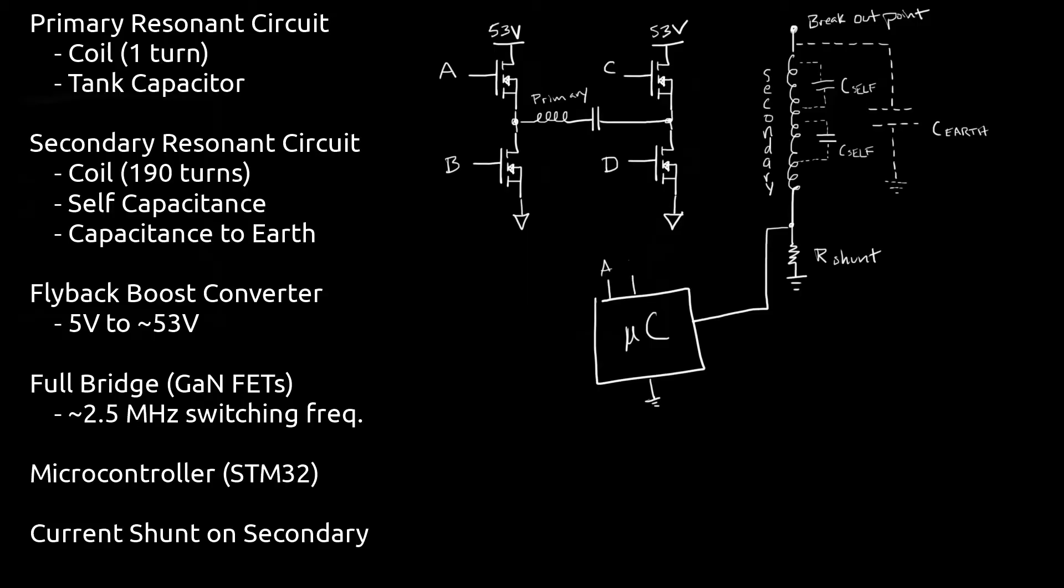It should be noted that this design also includes a dead time circuit which prevents each half bridge from having both of its GaNFETs on at the same time. This would result in a short circuit and destroy the transistors. Also, the microcontroller is optically coupled to the high voltage circuitry to keep it isolated. To see the full schematic you can clone Nicholas's github repo and view the schematic as a PDF. Okay, now that we have an understanding of how this design works, let's get into the build.